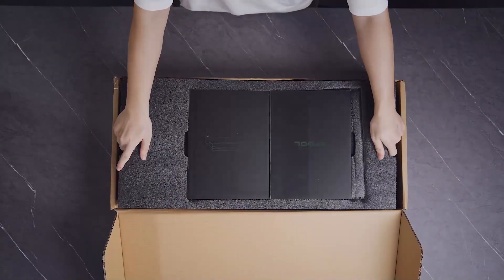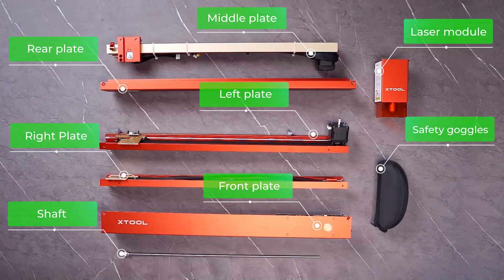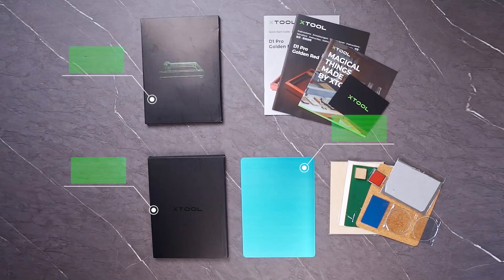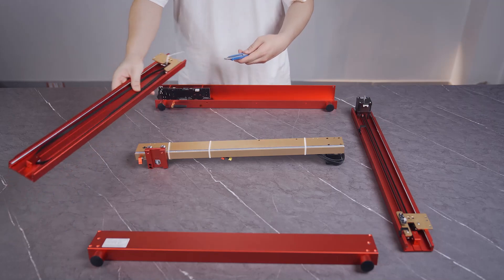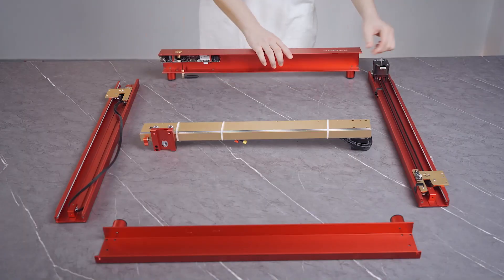Assemble X-Tool D1 Pro. Cut off the cable tie on the right plate. Fit the four side plates together.